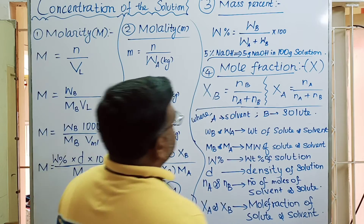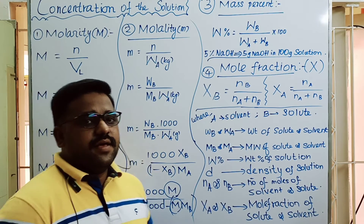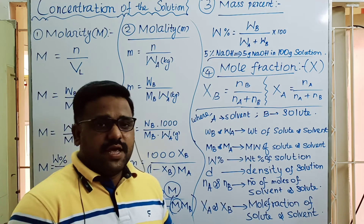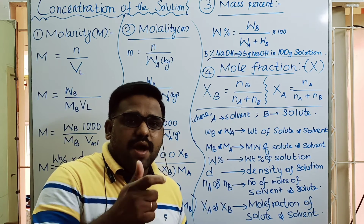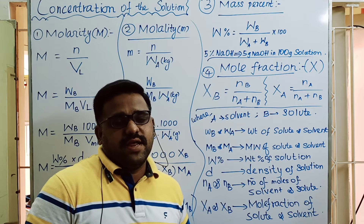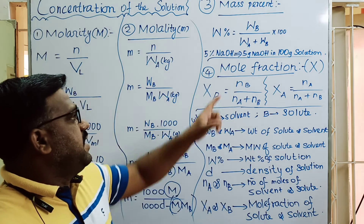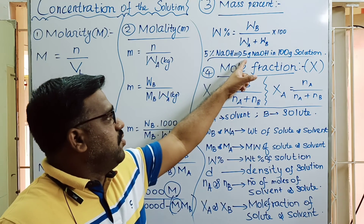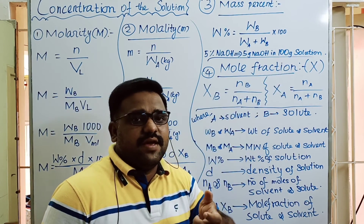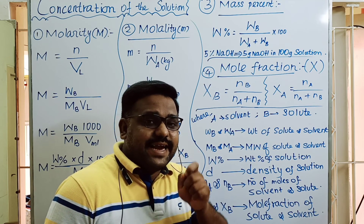For example, 5% NaOH means 5 grams of NaOH in 100 grams of solution, and 3% urea means 3 grams of urea in 100 grams of solution. So the weight of solute is 5 grams and the weight of solvent is 95 grams.